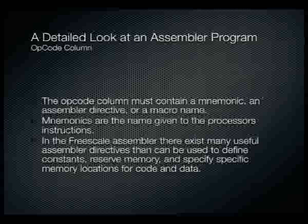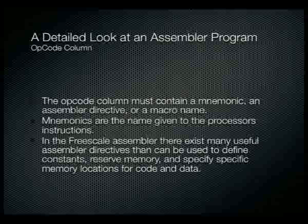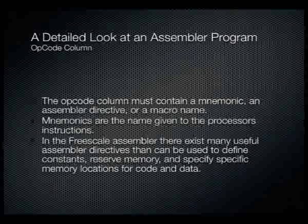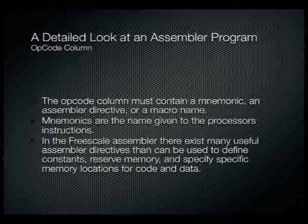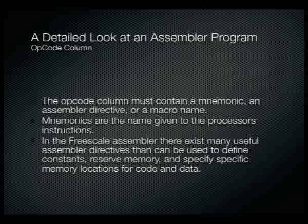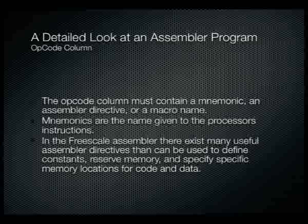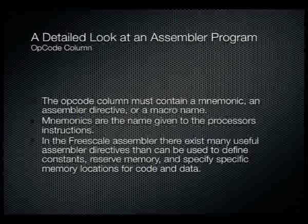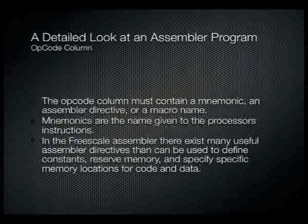The opcode column must contain a mnemonic, an assembler directive, or a macro name. Mnemonics are the names given to the processor's instructions — only four or five letters long but very descriptive. In the Freescale assembler there exist many useful assembler directives that we can use to define constants, reserve memory locations, and specify specific memory locations for code and data. They don't directly get interpreted by the assembler but guide it in how it should develop your code.